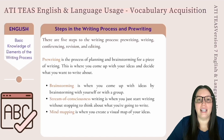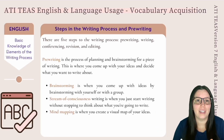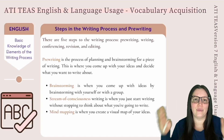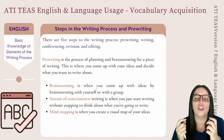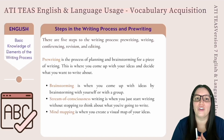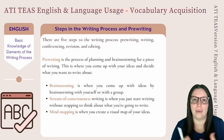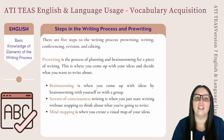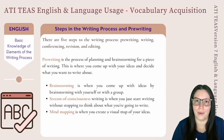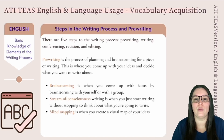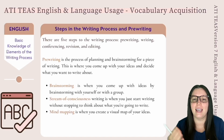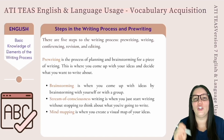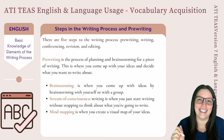Pre-writing is the process of planning and brainstorming for a piece of writing. This is where you come up with ideas and decide what you want to write about. There are many different kinds of pre-writing techniques, such as brainstorming, stream of consciousness writing, and mind mapping. Brainstorming is when you come up with ideas by brainstorming with yourself or with a group of people. Stream of consciousness writing is when you just start writing without stopping to think about what you're going to write next. Mind mapping is when you create a visual map of your ideas for your writing.